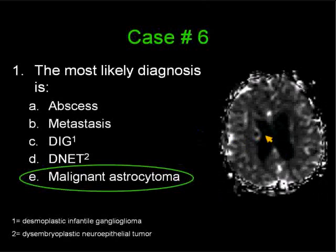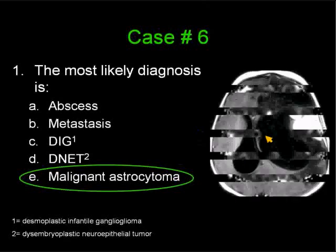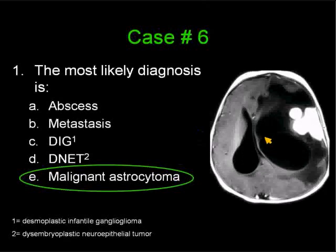Metastasis is extremely uncommon to the brain in children — they generally go to the bones. A DIG is a large cystic mass with a mural nodule that enhances. The mural nodule may have dural tails like in this case, and they may be spread in the pial space of the tumor.